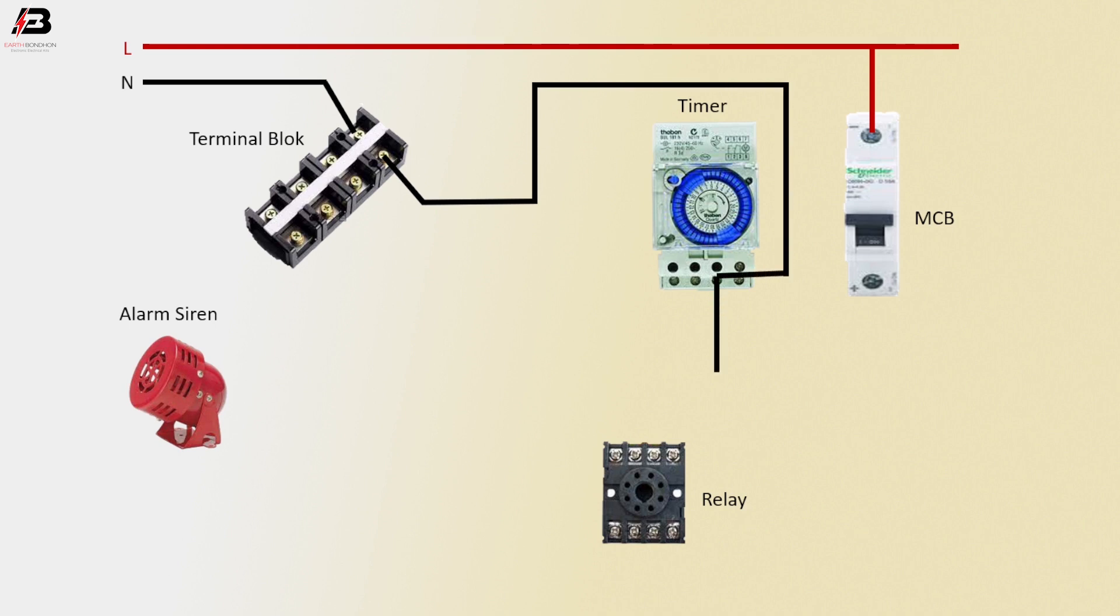Neutral connection from timer connects to relay. Phase connection from MCB connects to timer at two points.